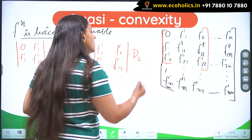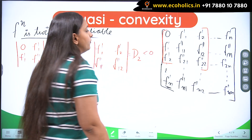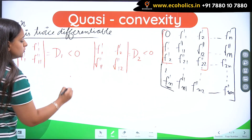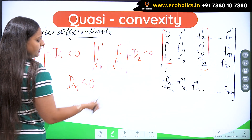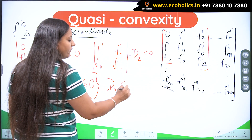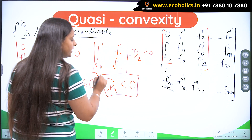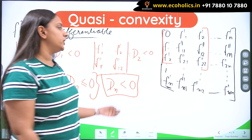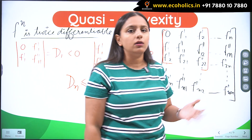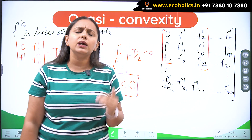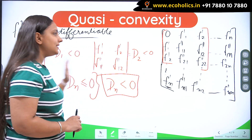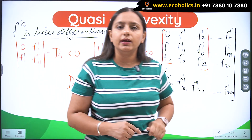D̄₂ should also be negative. Similarly, all the ordered determinants D̄ₙ should be negative — less than or equal to 0. This is the necessary condition. When every determinant is strictly less than 0, that is the sufficient condition. In quasi-concavity, even and odd determinants followed a different sign pattern, but in quasi-convexity each and every determinant must be negative only.